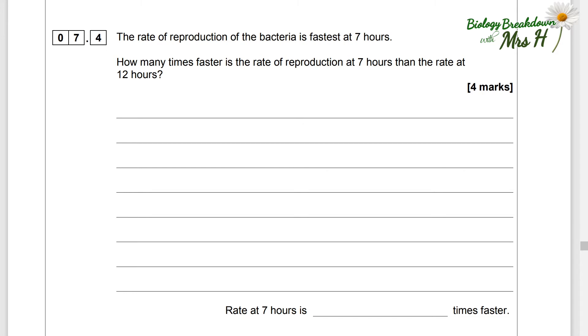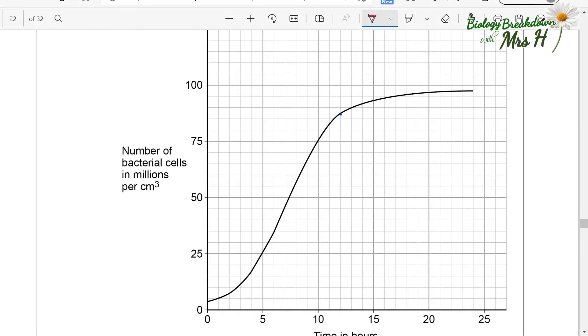7.4. The rate of reproduction of the bacteria is fastest at seven hours. How many times faster is the rate of reproduction at seven hours than the rate at 12 hours? Now we're going to have to work pretty hard for these four marks but if you love maths this would probably be your favourite question on the whole paper. If we look on the graph and you find 12 hours where the curve is you can see that it is actually curved. So to work out the rate we're going to have to draw a tangent.